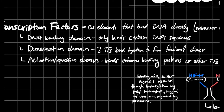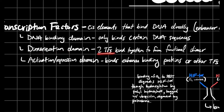Every transcription factor has three different domains: a DNA binding domain, a dimerization domain, and an activation/repression domain. Your DNA binding domain, as the name suggests, binds to certain specific DNA sequences. It's very specific to that enhancer region to allow for different types of gene expression when you need them. For dimerization, you essentially need two transcription factor proteins to bind together — to dimerize — in order to be functional.